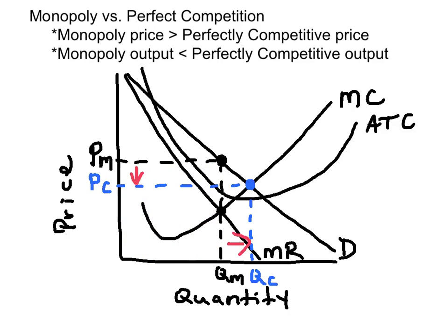Now let's compare the price and output of a monopolist with a perfectly competitive market. The monopolist produces where MR equals MC and the price is on the demand curve. If this became a perfectly competitive market, the market is going to produce at a level of output where marginal cost is equal to demand — QC. It's a greater equilibrium quantity than the monopolist quantity.